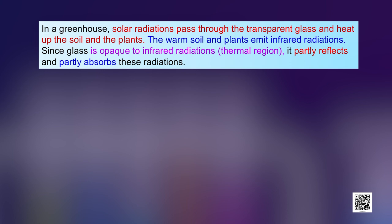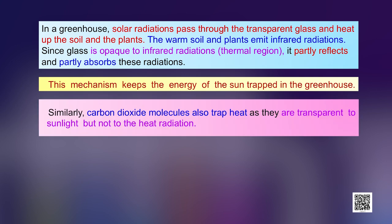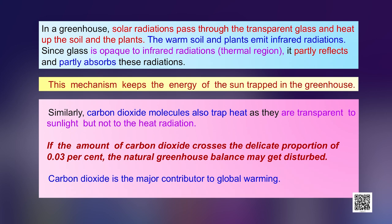In a greenhouse, solar radiations pass through the transparent glass and heat up the soil and the plants. This warm soil and plants emit infrared radiations. Since glass is opaque to infrared radiations, it partly reflects and partly absorbs these radiations, keeping the energy of the sun trapped in the greenhouse. Similarly, CO2 molecules also trap heat as they are transparent to sunlight but not to heat radiation. If the amount of carbon dioxide crosses the delicate proportion of 0.03 percent, the natural greenhouse balance may get disturbed. CO2 is the major contributor to global warming. Besides carbon dioxide, the other greenhouse gases are methane, water vapor, nitrous oxide, CFCs, and ozone.